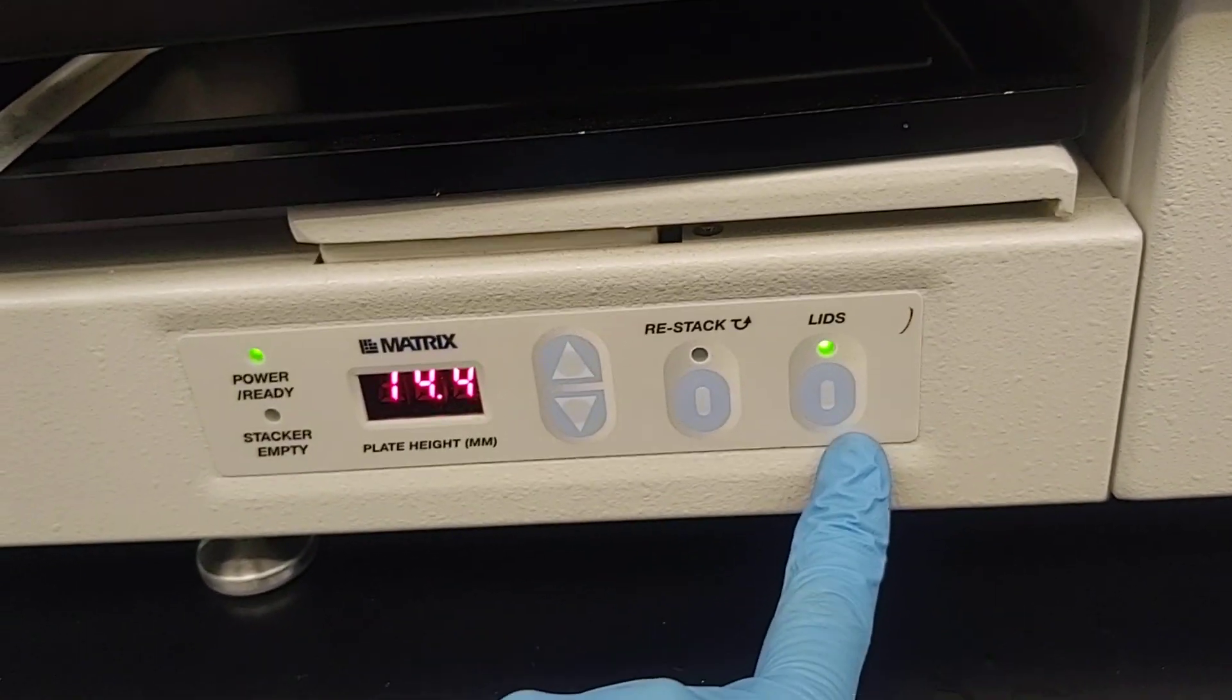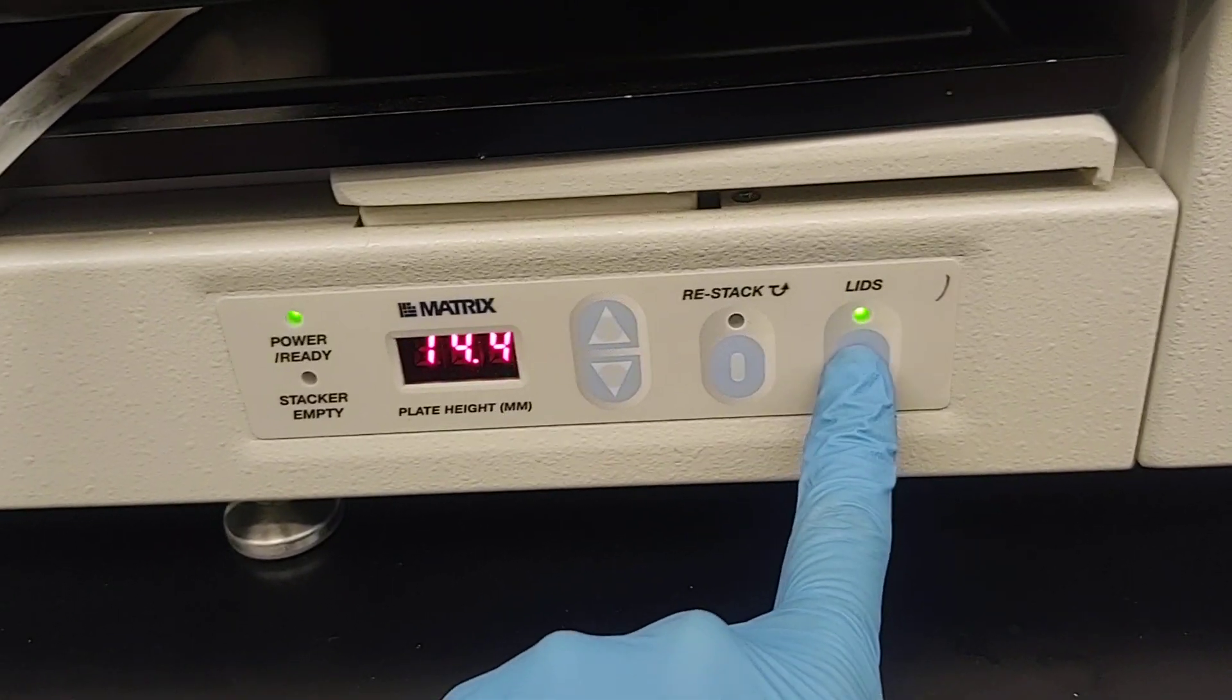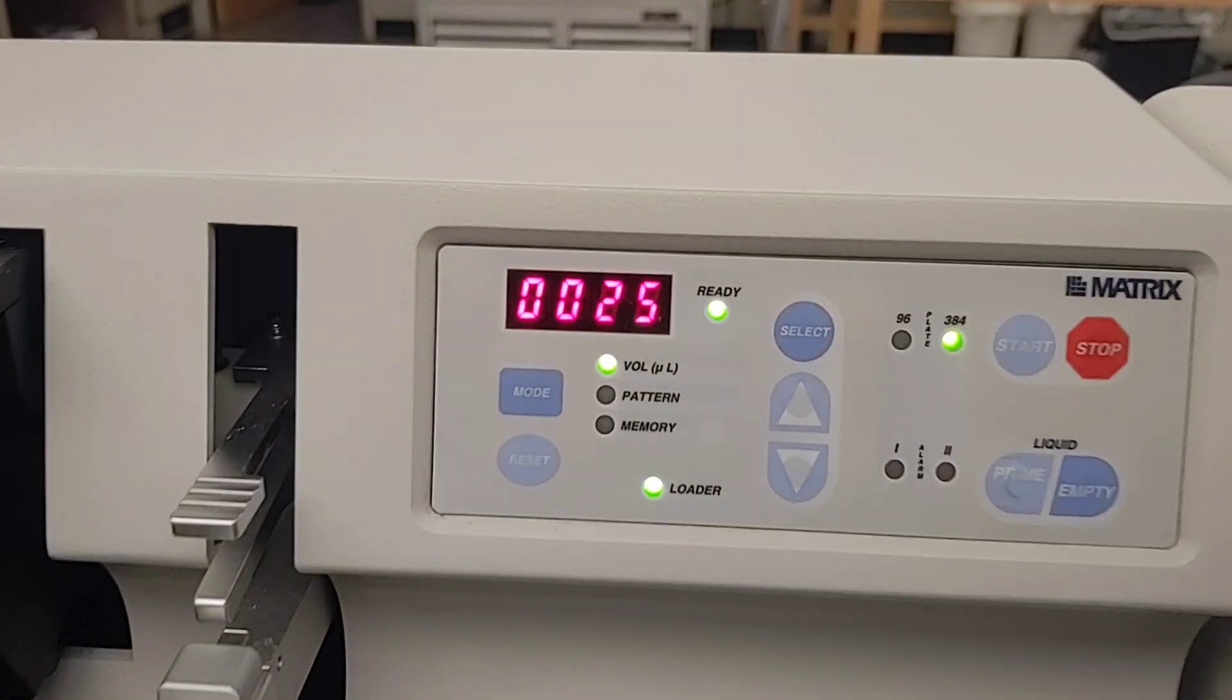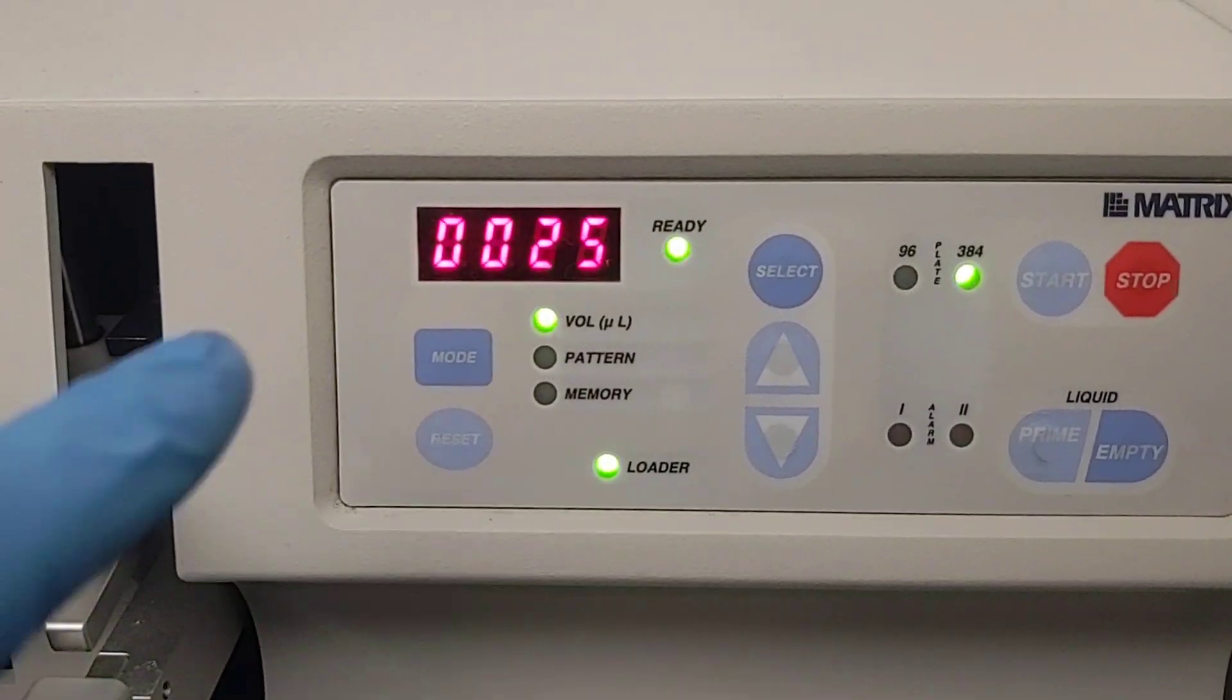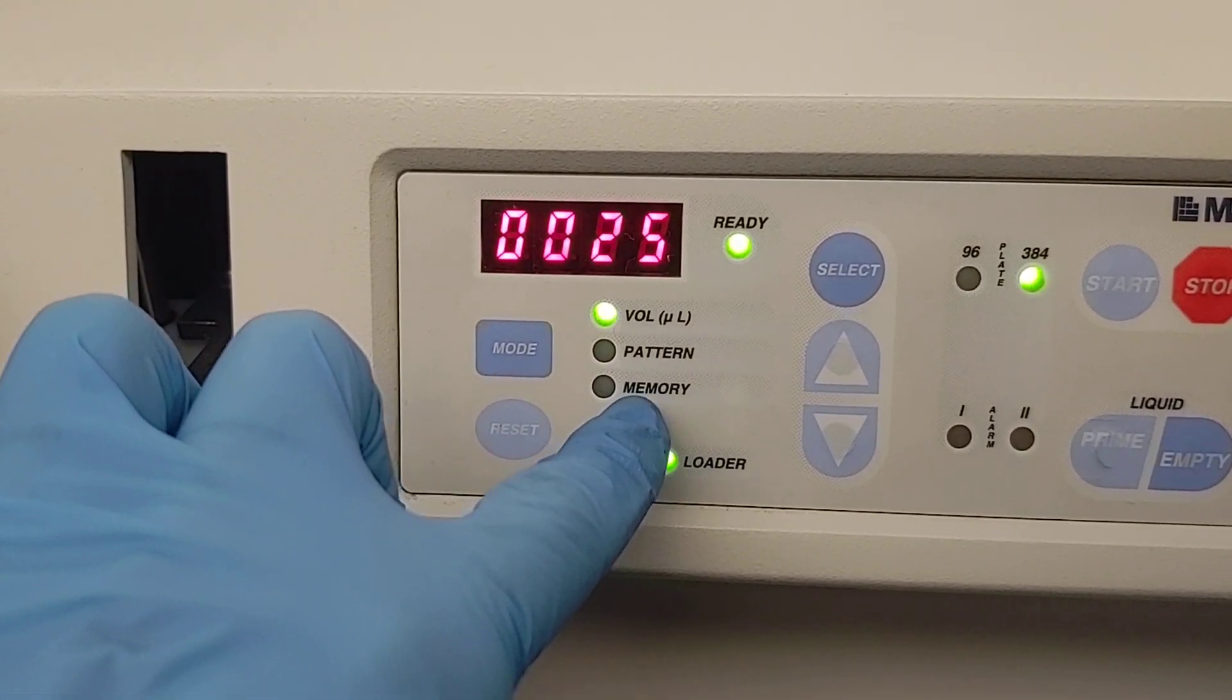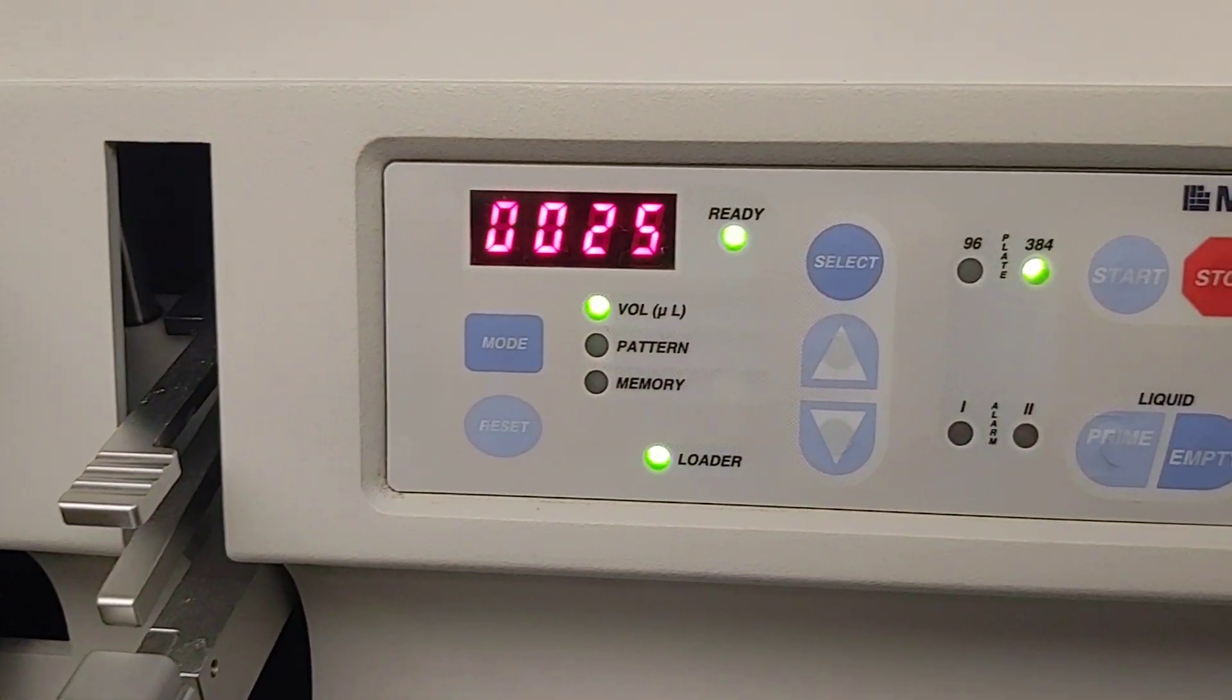If you want to load plates with lids on and have it automatically remove the lids and put them back on for you, then you can toggle that on. And then over here is where you can either load a program from the memory or just set a certain volume, in this case 25 microliters.